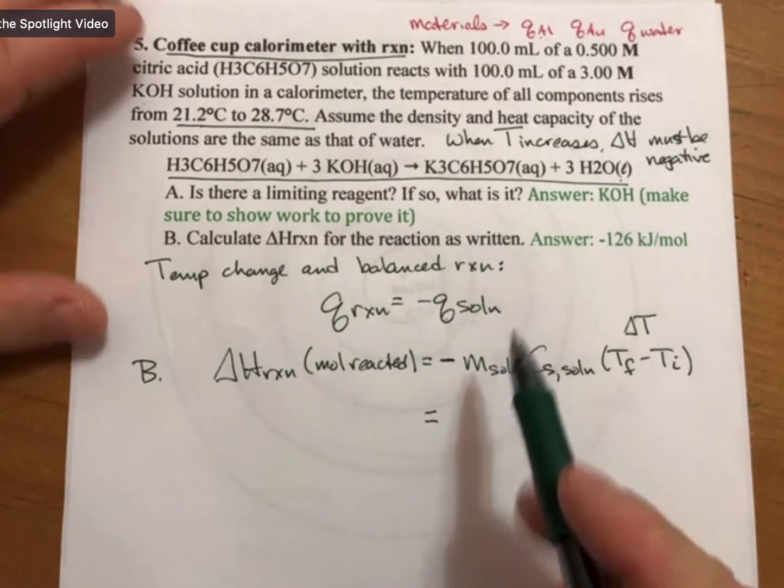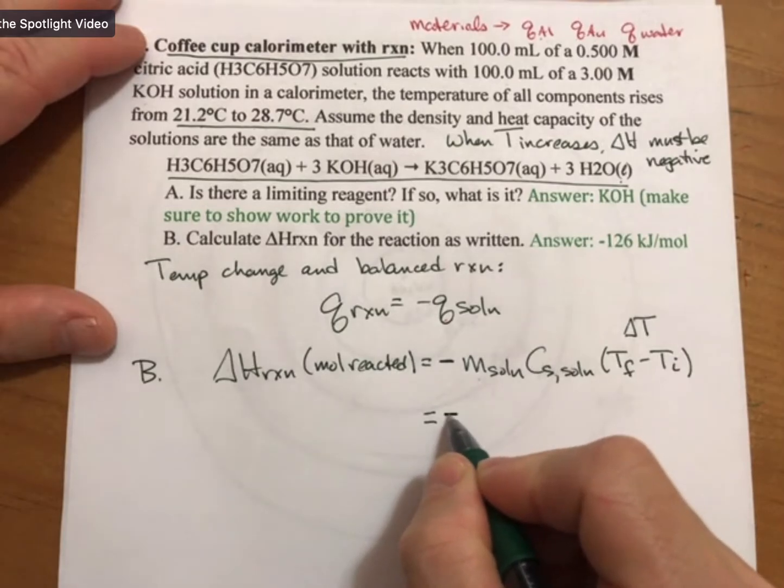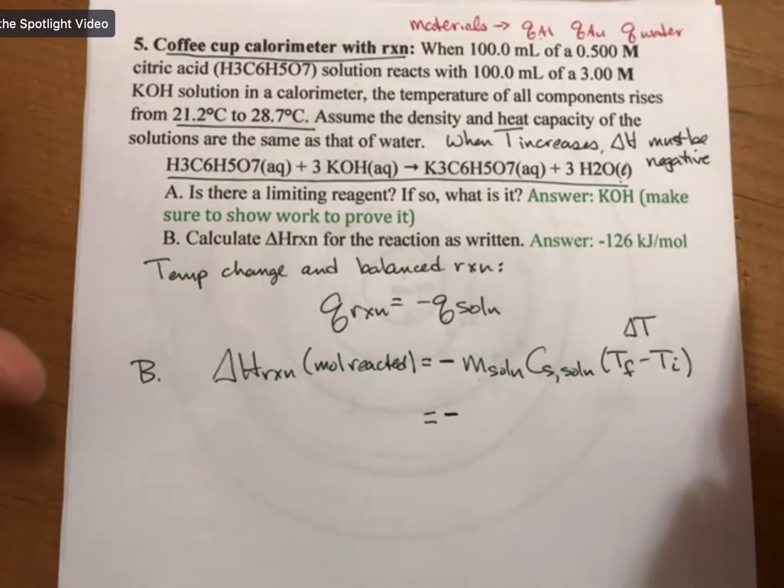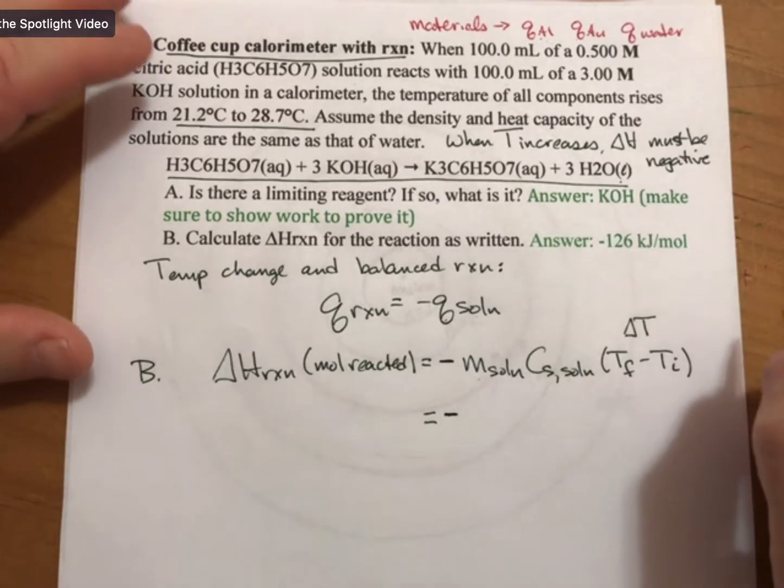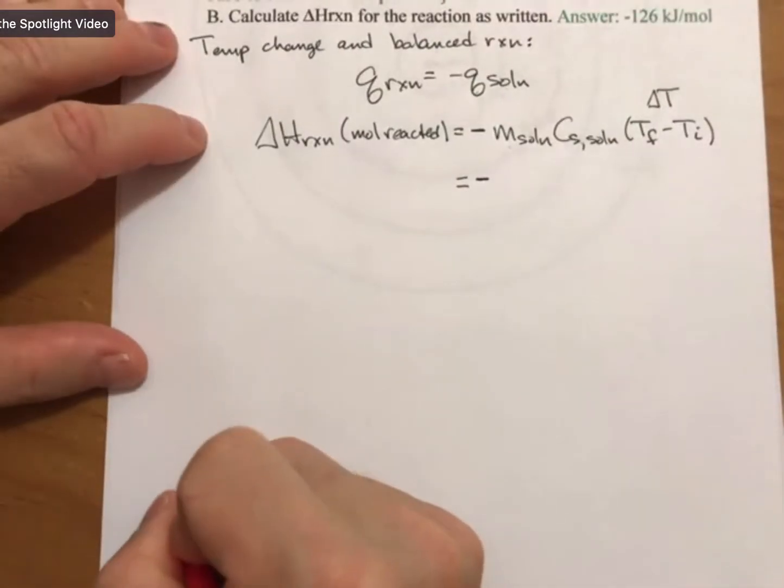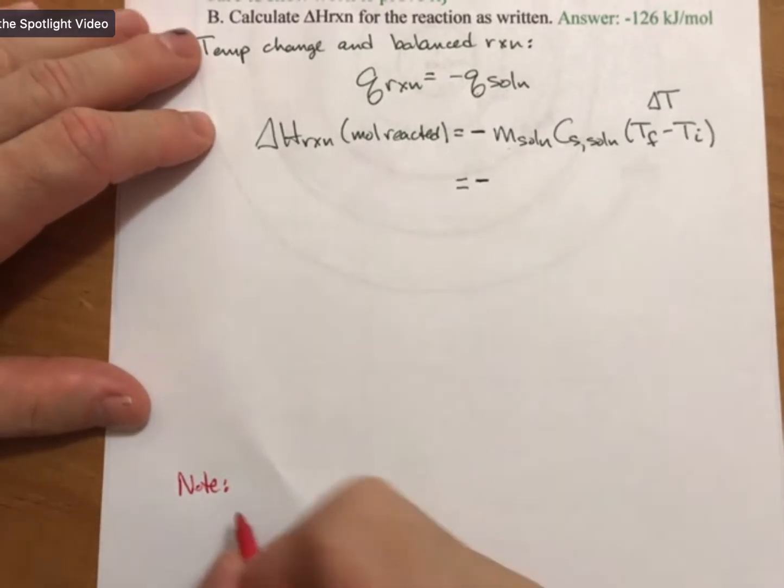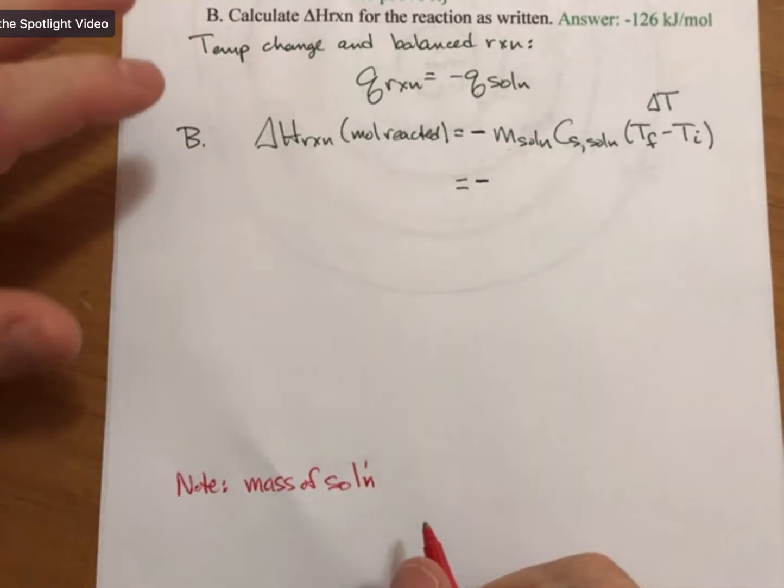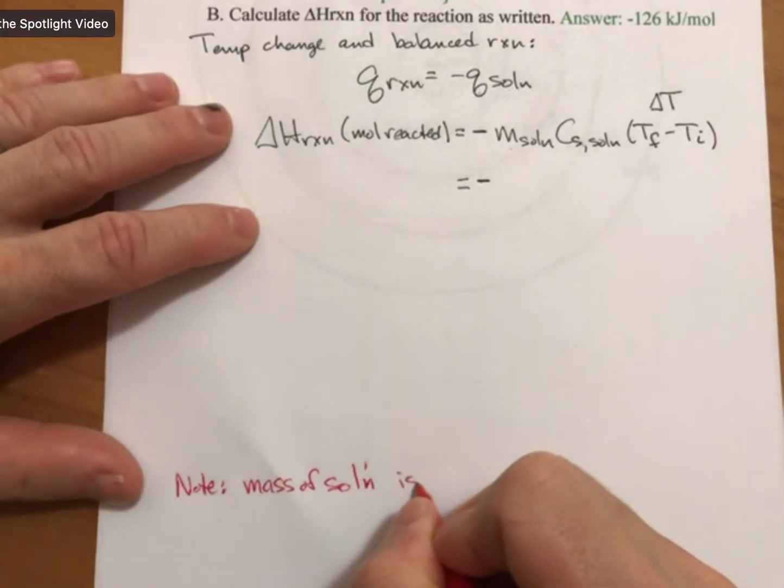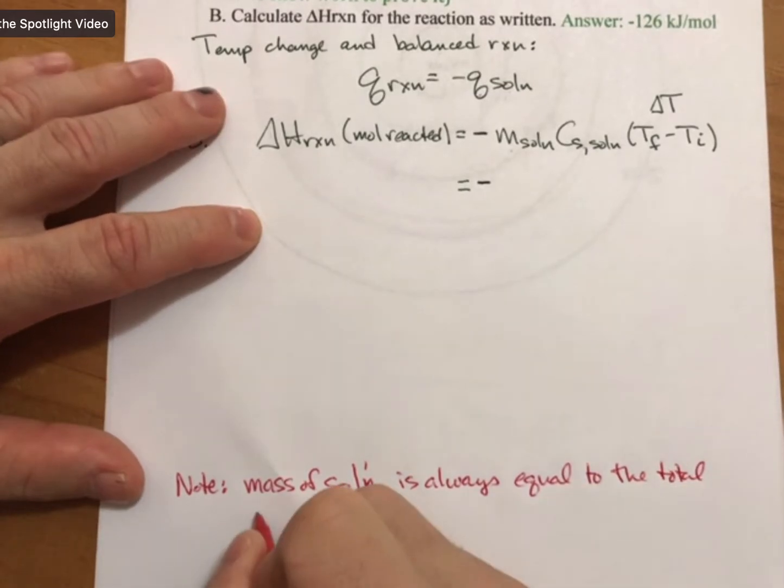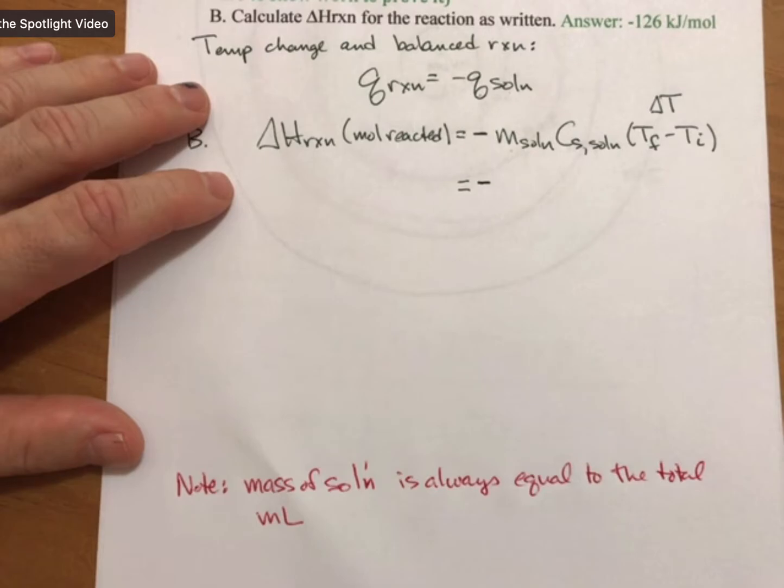So let's get back to our mass of solutions. I'm going to write down my minus sign and this is another particular sticking point. We're so used to doing moles to grams, but this is different. So the mass of solution, I'll make some notes down here to help you solve future problems. But this note is going to say that the mass of solution is always equal to the total milliliters of solution converted into grams.